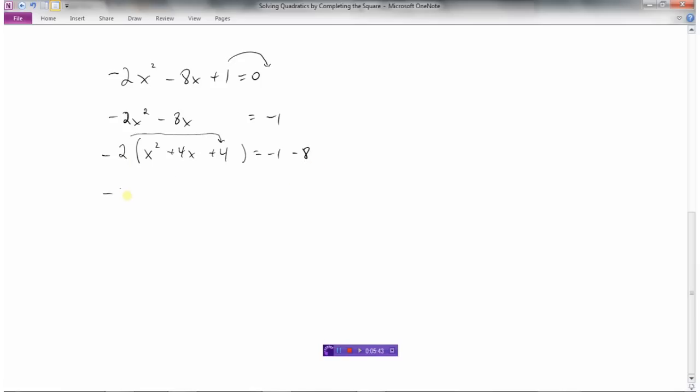So now I can go about business as usual. Two numbers that multiply to 4 and add to 4 are 2 and 2. So this just becomes the perfect square x plus 2. x plus 2 squared equals negative 1 minus 8 is negative 9.